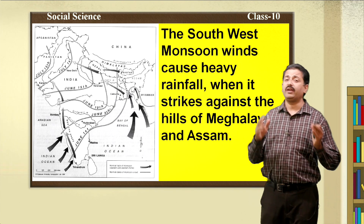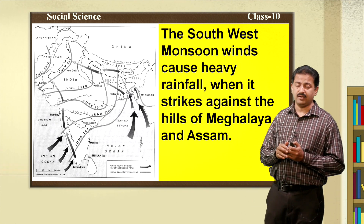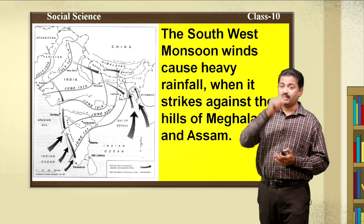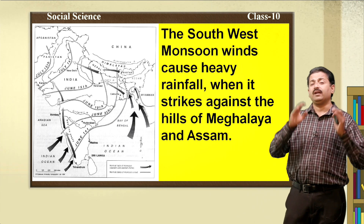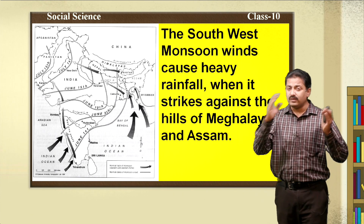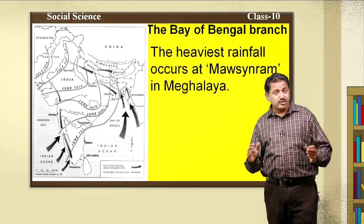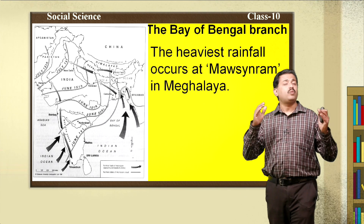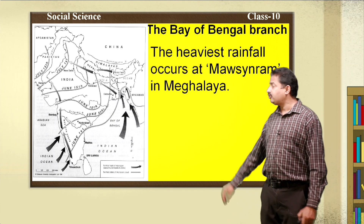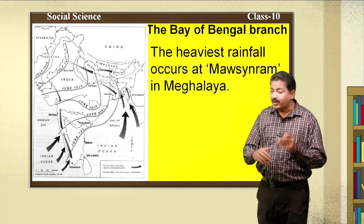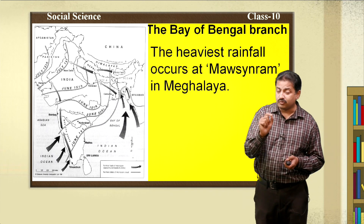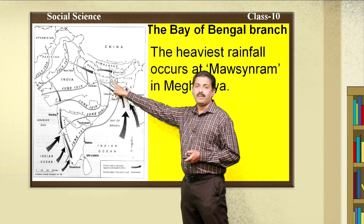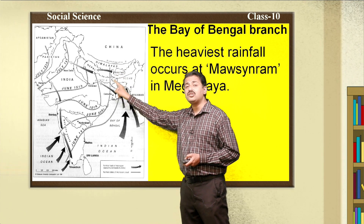The Southwest monsoon winds cause heavy rainfall — nearly 75 percent of rain is received in this season. Meghalaya receives maximum rainfall. There is a place called Mawsynram in Meghalaya, which receives 1141 centimeters of rainfall — the heaviest rainfall in the country. So in the activity before the lesson began, the place Mawsynram in Meghalaya was shown — Mawsynram receives the country's highest rainfall.